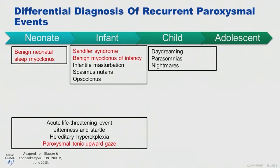In young kids and neonates, you might think about benign neonatal sleep myoclonus, acute life-threatening events, jittering, startle, and in the appropriate patient hereditary hyperekplexia, and paroxysmal tonic upgaze.